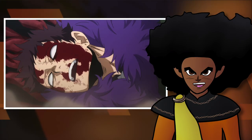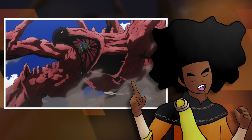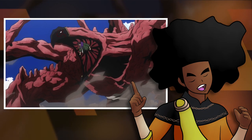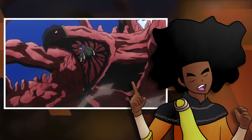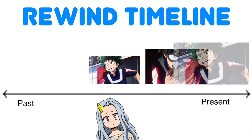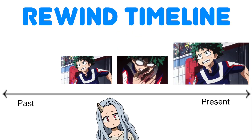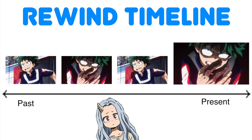It can undo injuries or modifications from the present or past, and because of how time works, it can be used to bring back those injuries and modifications as well. The logic here is that if she rewinds an injured person back to before they were injured, their former injured state is now their past state. Since Eri can reverse a person to their past state, she can reverse a person back to that past injured state.